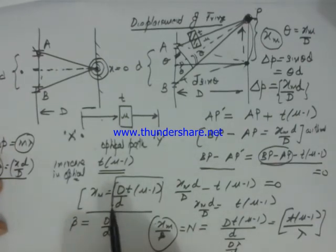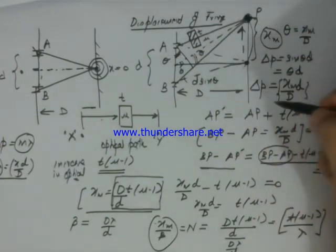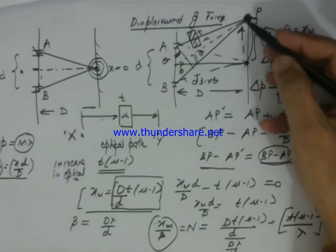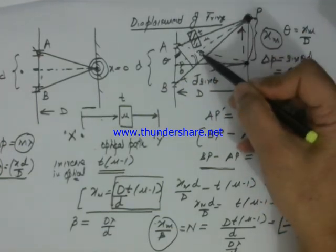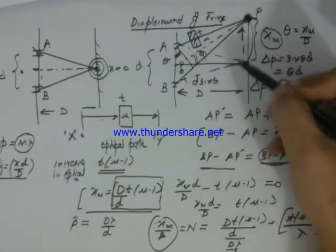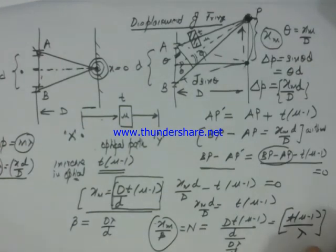This is the number of fringes which have shifted, and this is the distance which has shifted from the center towards point P. Please note that fringes will always shift towards that direction where you put the slab. Had you put this slab here, the fringes would have shifted downwards, so it always shifts towards the point where you put the slab.